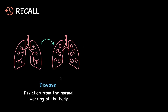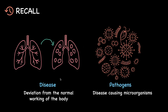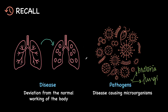Now quickly to recall, we know that a disease can be defined as a deviation from the normal functioning of the body. And often diseases are caused by pathogens, which are microscopic organisms that invade into the body and cause a disease. Now pathogens can be bacteria, they can be fungi, or they can even be viruses. And just like us, animals and plants can also be attacked by pathogens which cause diseases.